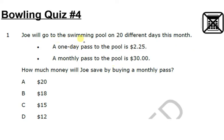So number one, Joe will go to the swimming pool on 20 different days this month. A one-day pass to the pool is $2.25. A monthly pass is $30. How much money will Joe save by buying a monthly pass? So it's not asking you to figure out which the better deal is. It's telling you that the better deal is the monthly pass. It just wants to know how much money you're going to save.